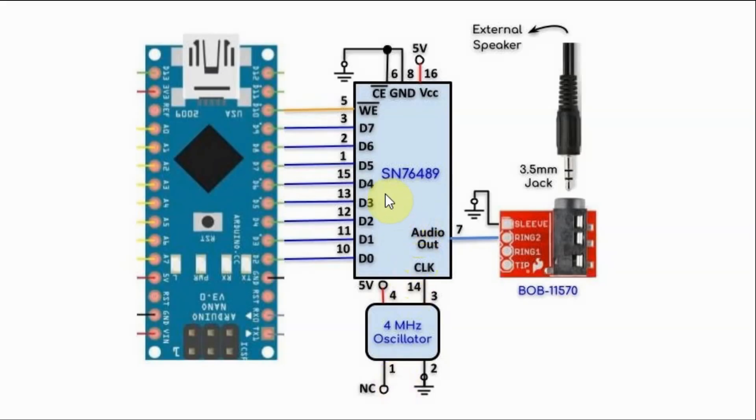This is a circuit diagram showing the interfacing of the IC with the Arduino Nano. The data lines D0 to D7 are connected to eight digital pins of the Arduino, and the write enable is connected to another digital pin. The chip enable is grounded.